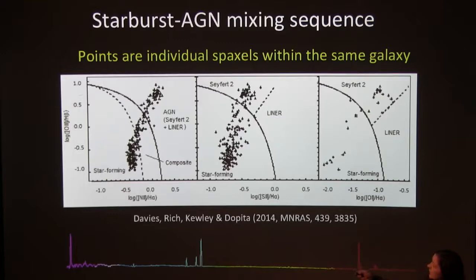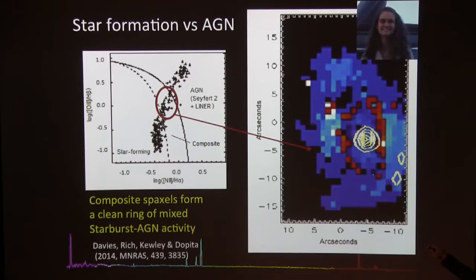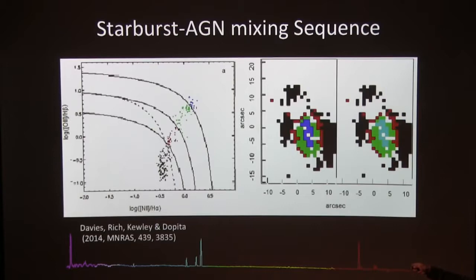Now we can ask: how far out does the AGN narrow-line region go? Plotting specific points, they lie in a ring — that's the narrow-line region radius. Beyond this we have pure star formation, and above this line it's dominated more than 50% by AGN. We can do better: dissecting the line ratio diagram into different positions up the sequence gives more rings. Dominated above 90% AGN; 40-60% AGN in green; 30-40% AGN in red; and pure star formation in black. This means for every spaxel we can separate the contribution from star formation and the contribution from AGN — the first time we've ever been able to do this.